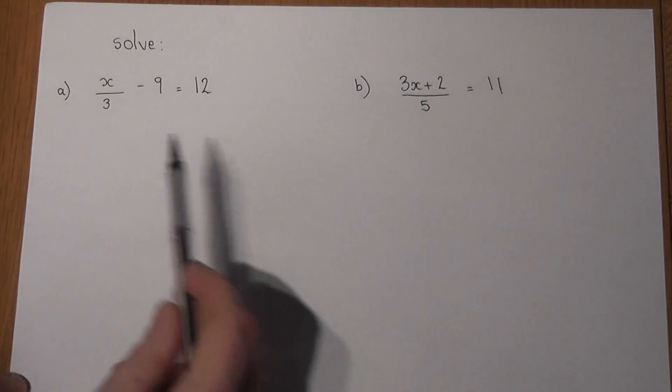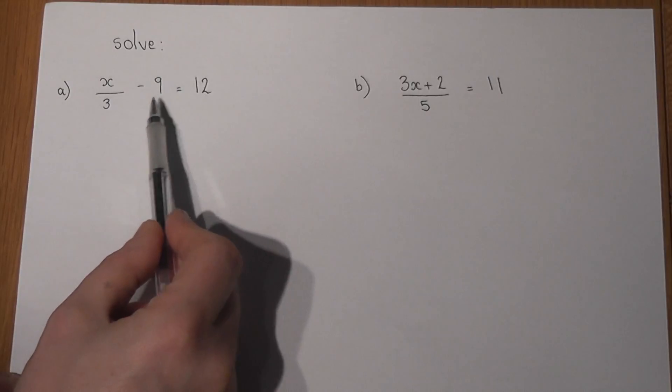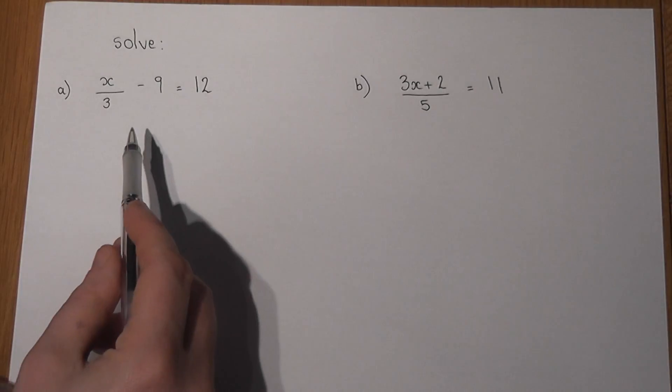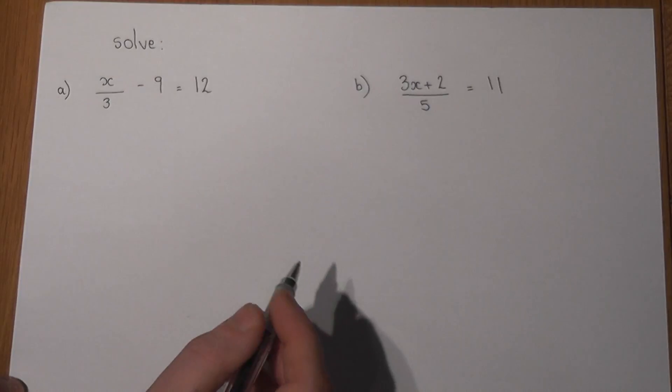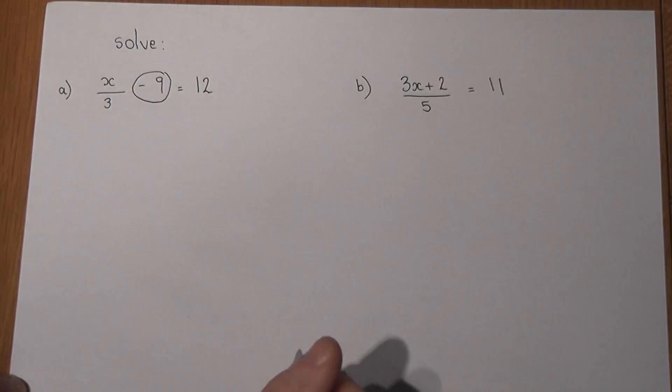Now in the first example we have a fraction minus an integer equals, in this case, 12. Now to solve an equation like this, I suggest that we look at the minus 9 first, and if we add the 9 to the other side so the minus 9 cancels off...